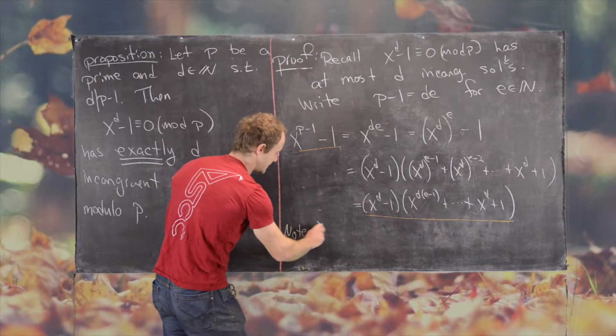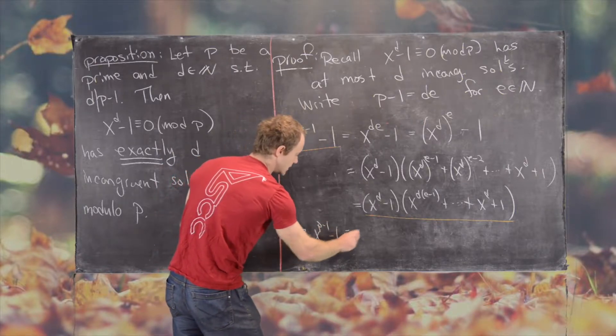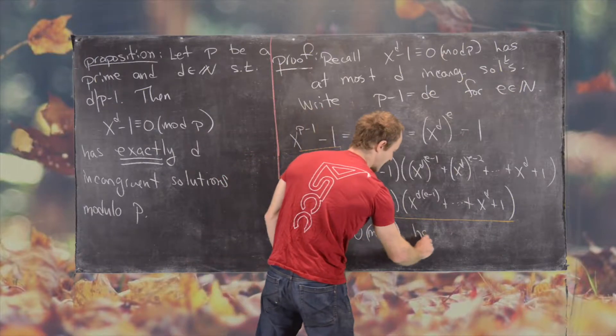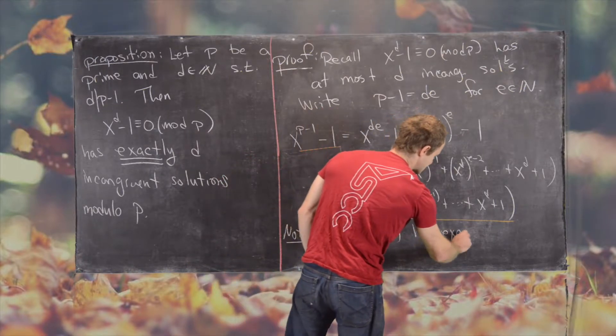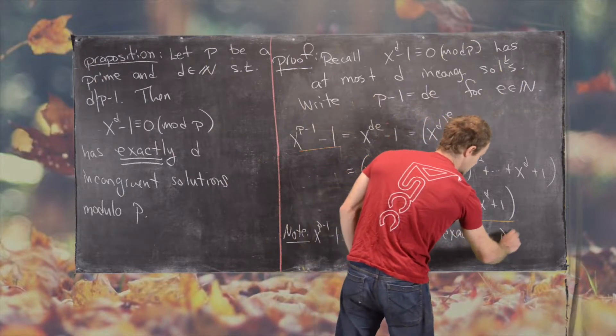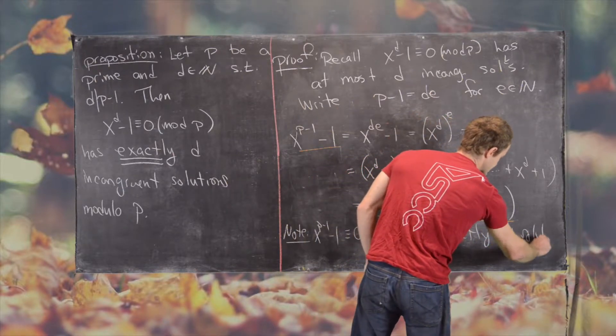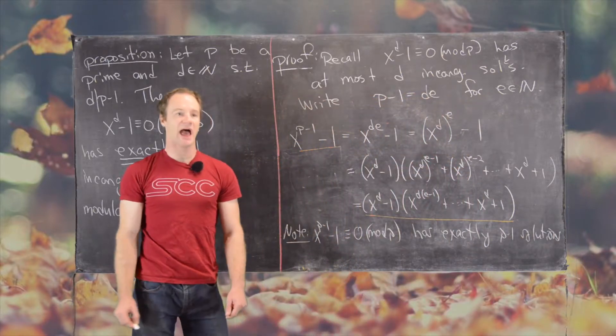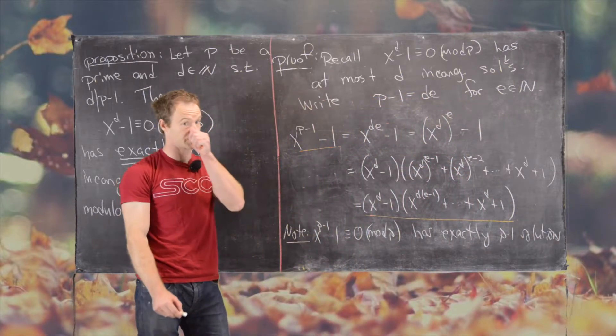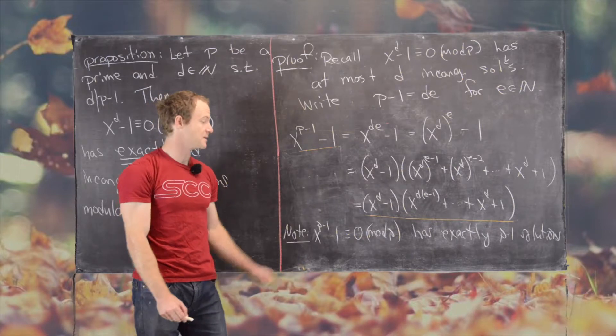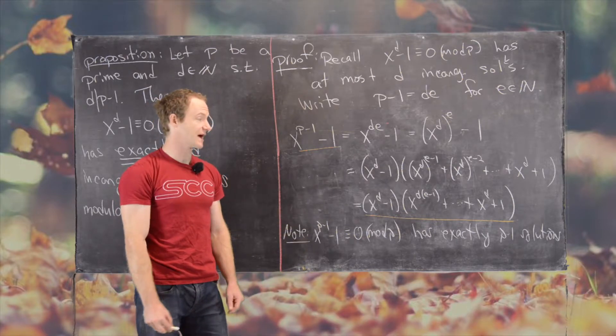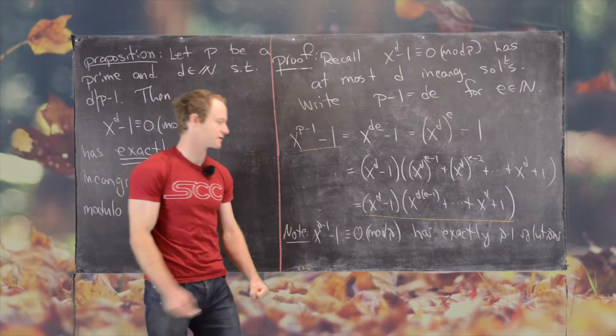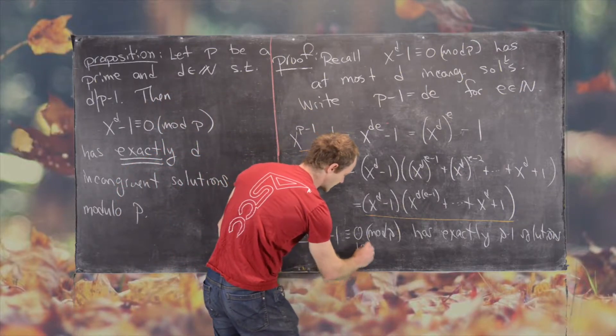And that is x to the p minus 1 minus 1 congruent to 0 mod p has exactly p minus 1 solutions. We know it has at most p minus 1 solutions again by that previous theorem. But we know it also has exactly p minus 1 solutions because we can put our hands on those solutions.